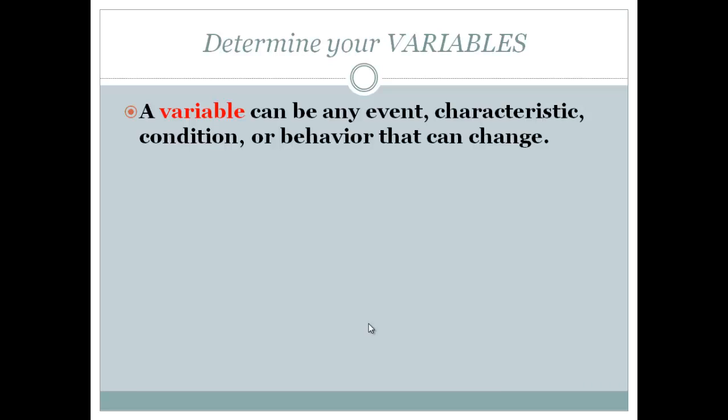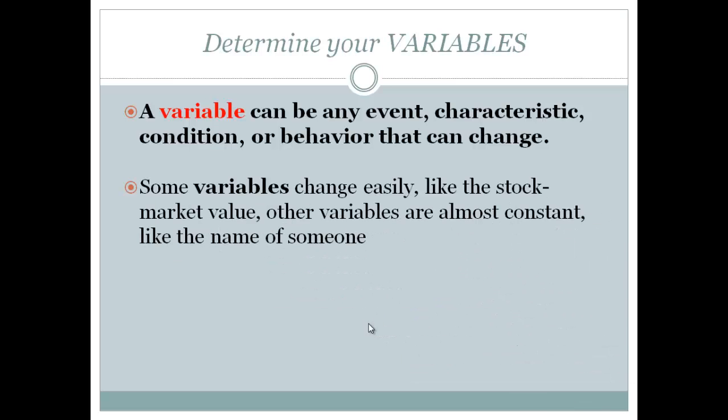A variable is any event, any characteristic, any condition, any behavior, any emotion that can change. It changes according to different factors. Some variables change really easily, like somebody's mood or stock market value. Other variables are pretty constant, difficult to change. Those might be somebody's name, somebody's temperament, or somebody's gender. Researchers are often seeking to measure some of these variables.